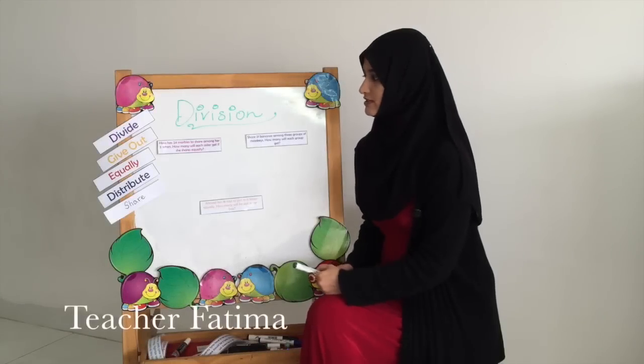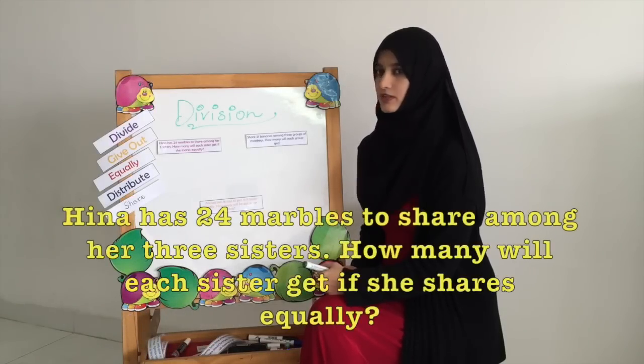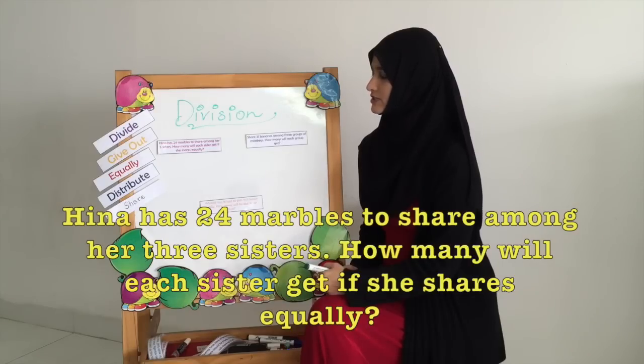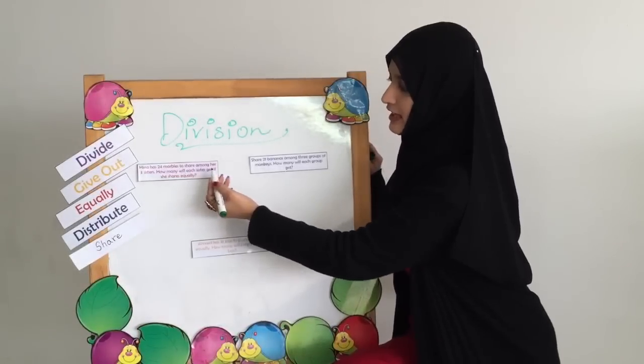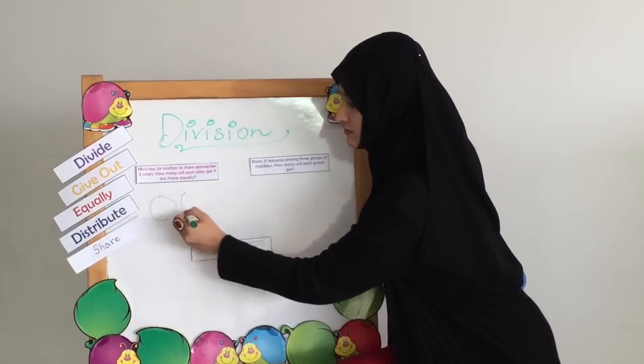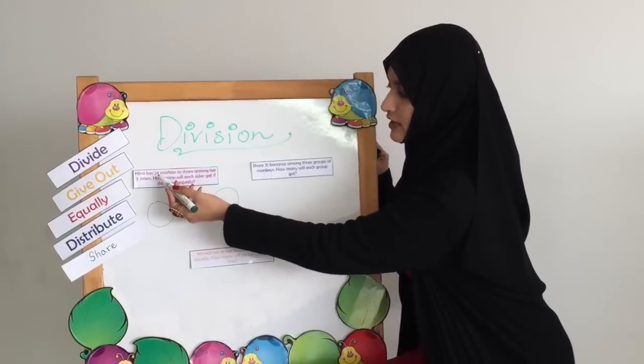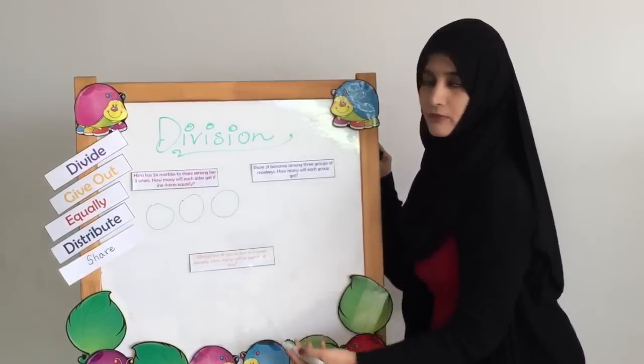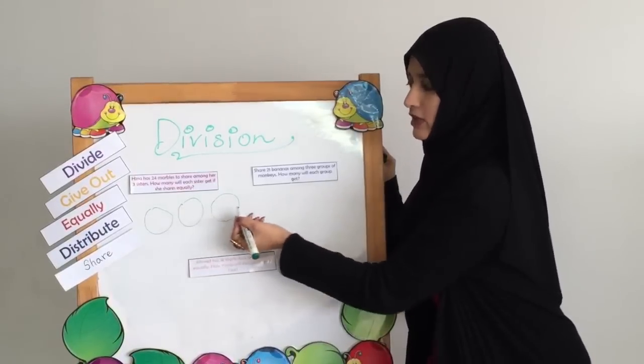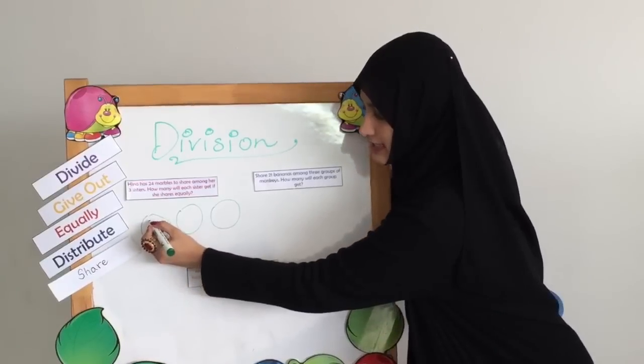The first question here is, Hina has 24 marbles to share among her three sisters. How many will each sister get if she shares equally? 24 marbles are there and there are three sisters. So let's draw these three sisters which are going to be our sets. We have to divide and distribute 24 marbles equally. So we are going to give out the marbles till we come to 24 and then we see how many each sister gets.